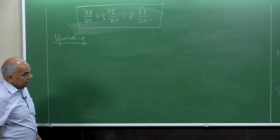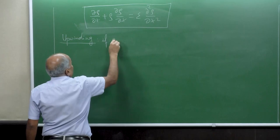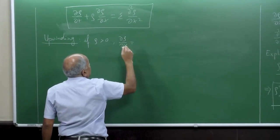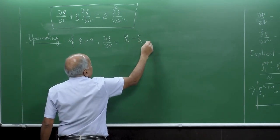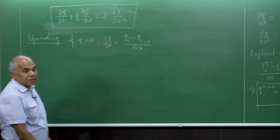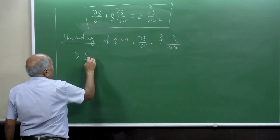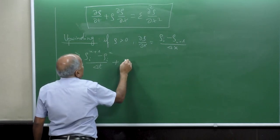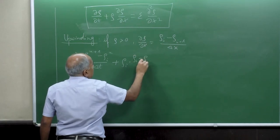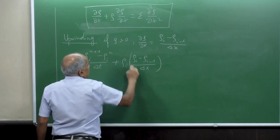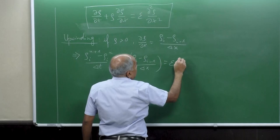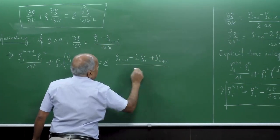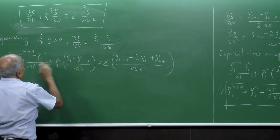For upwinding, only the convective part changes. If ρ is positive, we use the backward difference: ∂ρ/∂x ≈ (ρᵢ − ρᵢ₋₁) / Δx. So the scheme becomes: (ρᵢⁿ⁺¹ − ρᵢⁿ) / Δt + ρᵢⁿ · (ρᵢⁿ − ρᵢ₋₁ⁿ) / Δx = ε · (ρᵢ₊₁ⁿ − 2ρᵢⁿ + ρᵢ₋₁ⁿ) / Δx², evaluated at time level n.